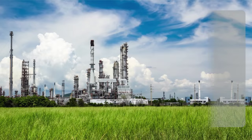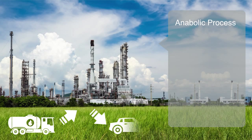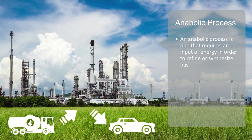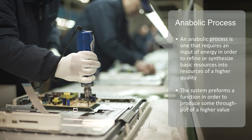Inversely, the output of this system might be used to fuel another. For example, the processing of crude petroleum within a refinery is required in order to produce the input for a vehicle of transportation. This is an example of an anabolic process — that is, one that requires an input of energy in order to refine or synthesize basic resources into resources of a higher quality. The assembly of parts on a production line into a finished product is another example: it requires work to be done, meaning the system performs a function in order to produce some throughput of a higher value. The conversion of coal into electricity is another example, as electricity is a much higher quality energy than coal.